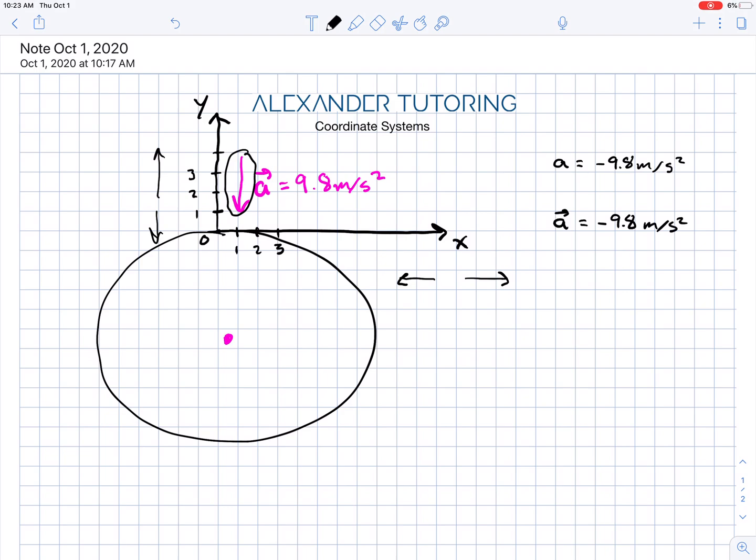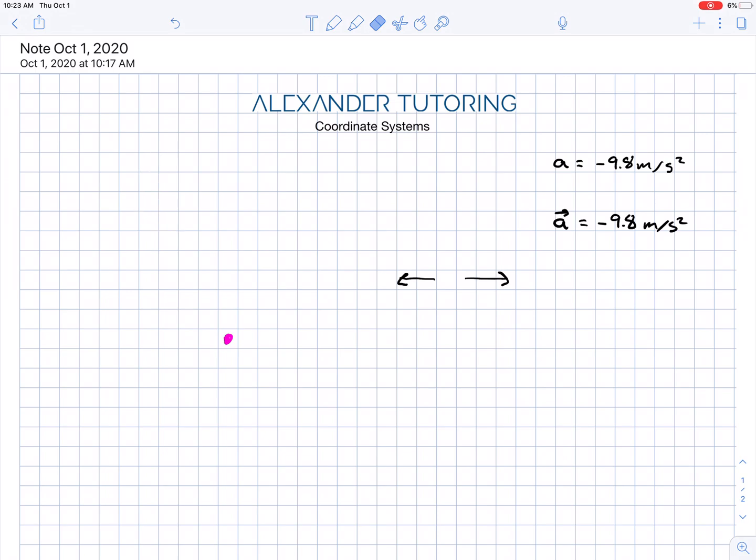Now, let's do the whole thing over again with a different choice of coordinates. Coordinate choice is arbitrary. Okay, you can pick whatever you want. You just have to be consistent. So let's try that all over again. Except this time, I'm going to make my coordinate system like this. Okay, so here's the Earth down here.